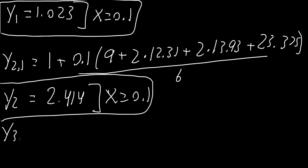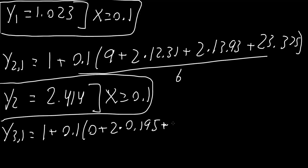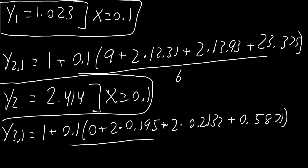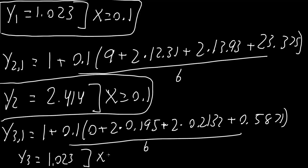Finally, y3,1 equals 1 plus 0.1 times (0 plus 2·0.195 plus 2·0.2132 plus 0.5871) divided by 6, giving y3 equals 1.023 when x equals 0.1. And that's all we need to do for this problem.